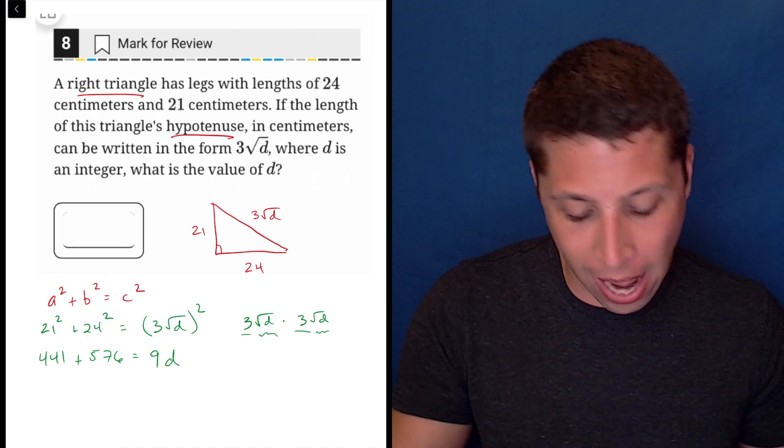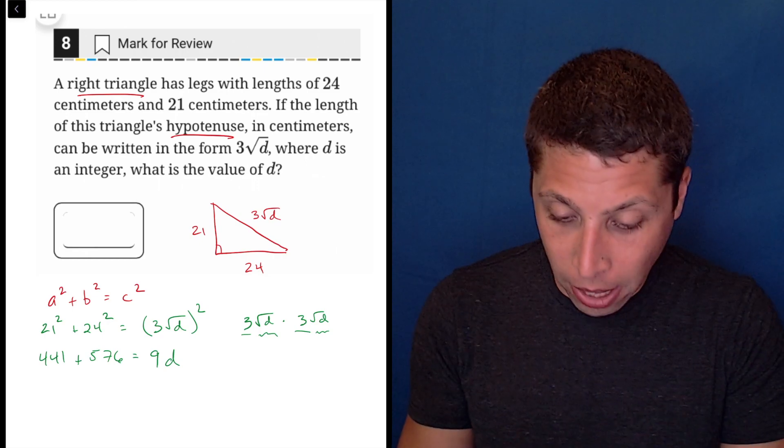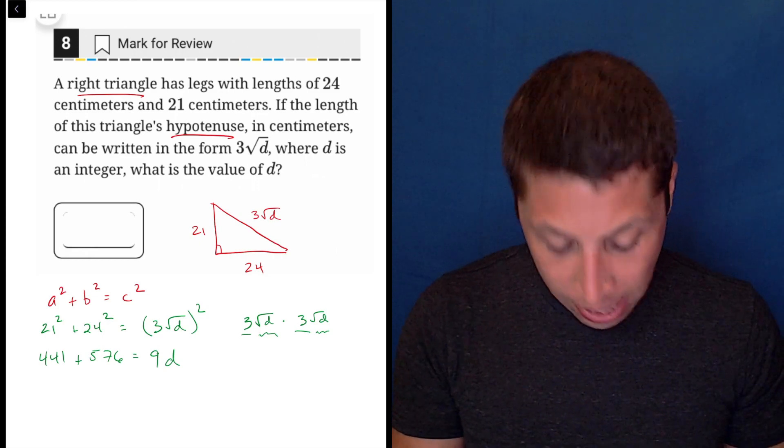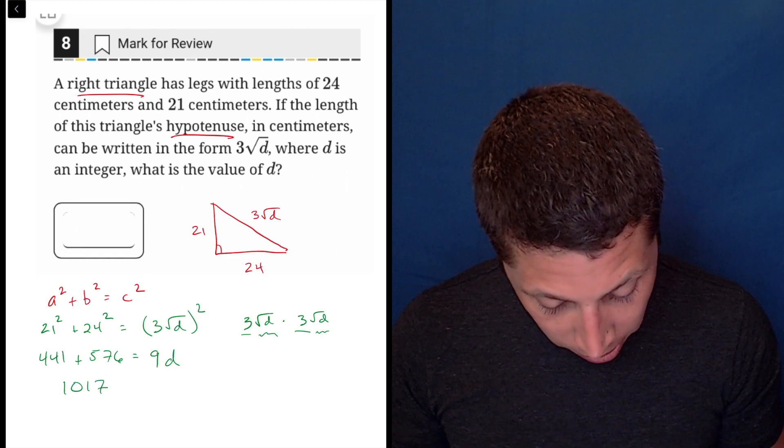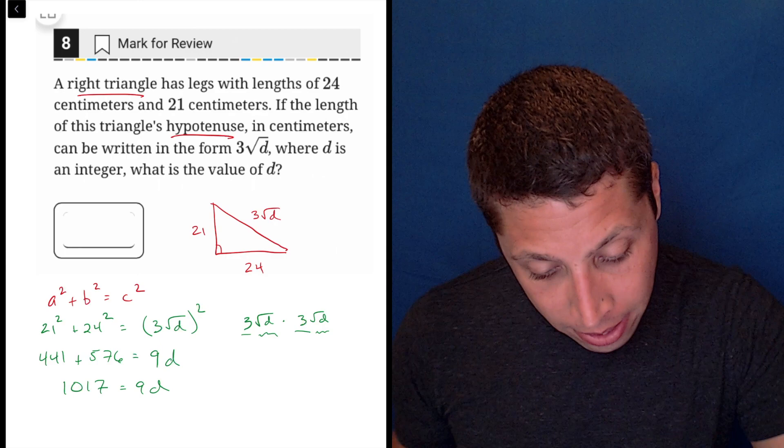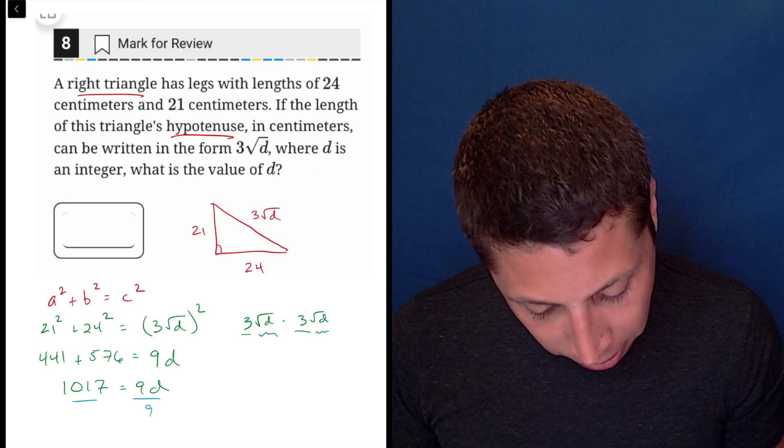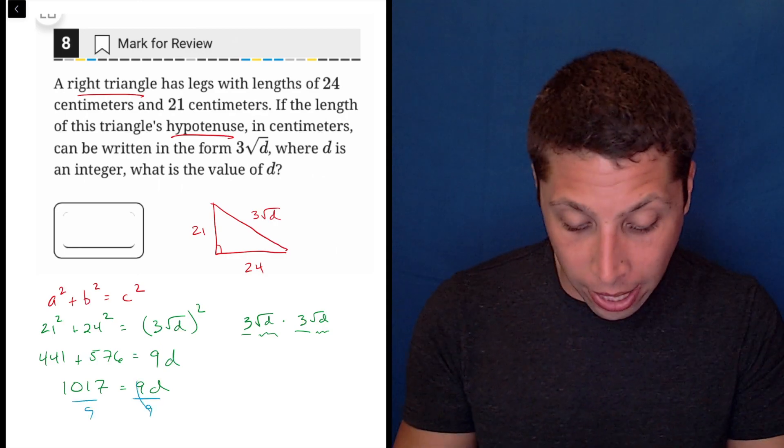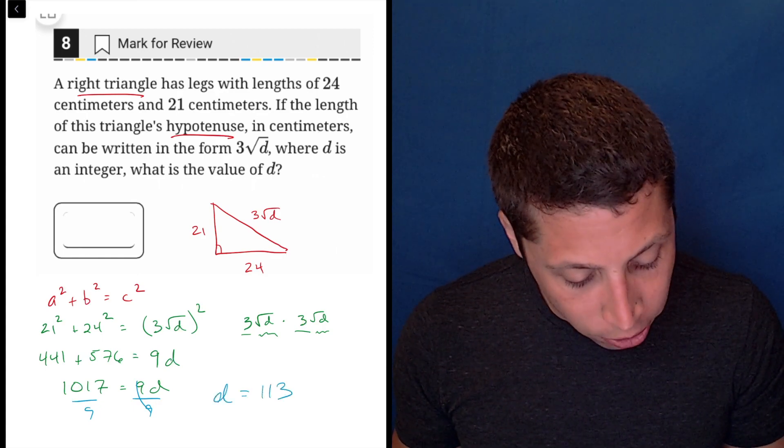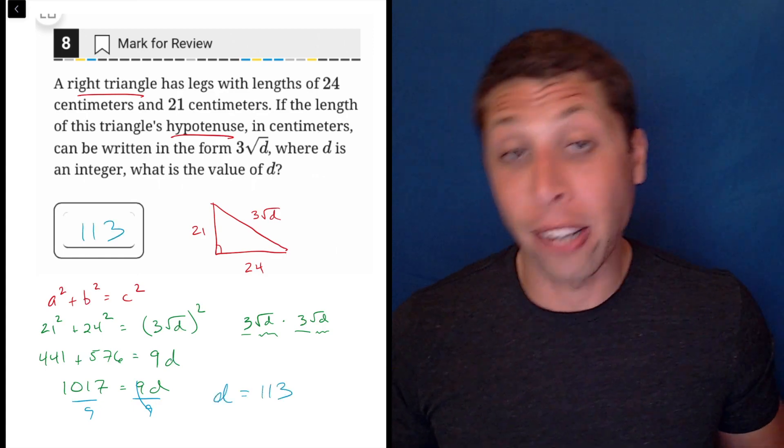The radical scared us at first, but now this is pretty easy. Let's just combine like terms, 441 plus 576 is 1,017, and that's equal to 9d. And we'll finish this off just by dividing both sides by nine. And when we do, we get that d is equal to 113, and that is our answer.